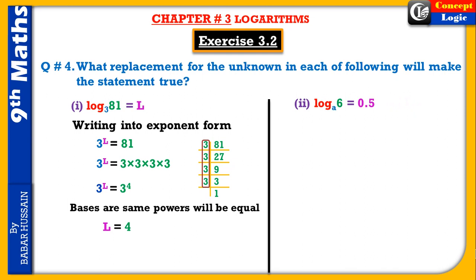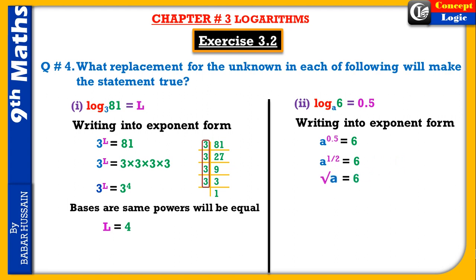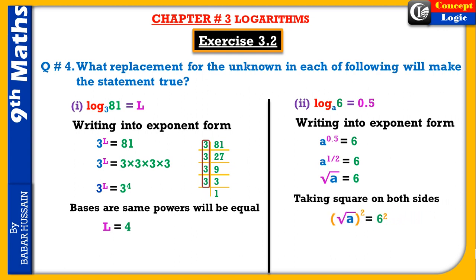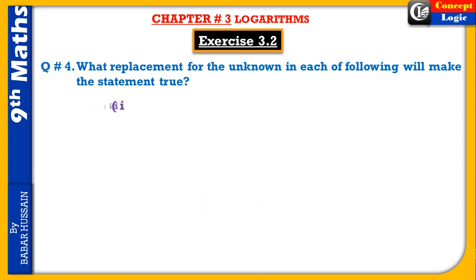Second part: log base a of 6 = 0.5 — exponent form میں لکھیں گے: a^0.5 = 6۔ 0.5 یعنی one by two = half ہوتا ہے، تو a^(1/2) = 6، یعنی √a = 6۔ اب a چاہیے، تو taking square on both sides: square root cancel ہو جائے گا — a = 6² = 36۔ یہی ہمارا answer ہے۔